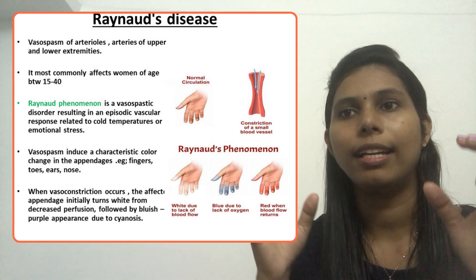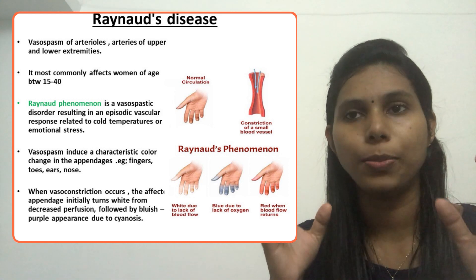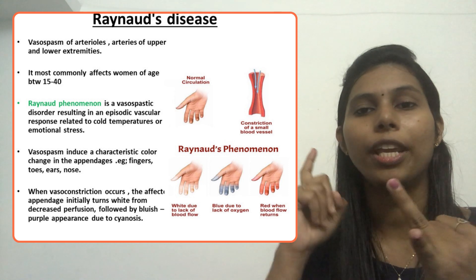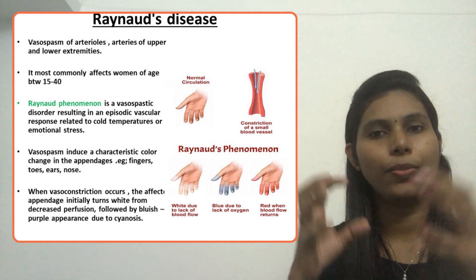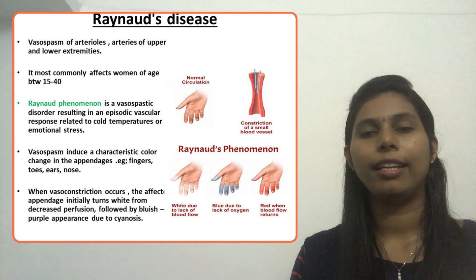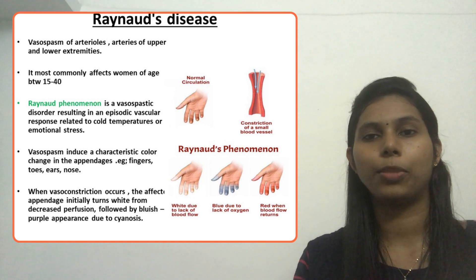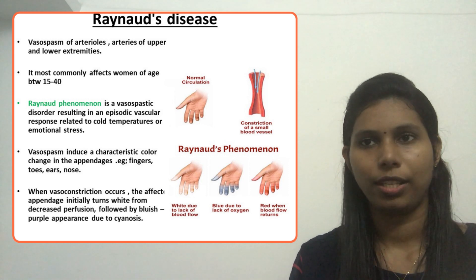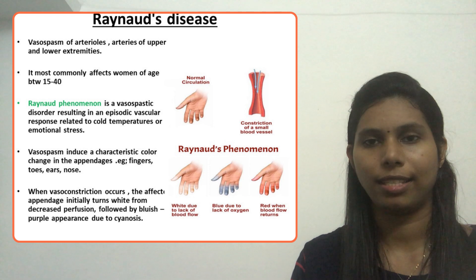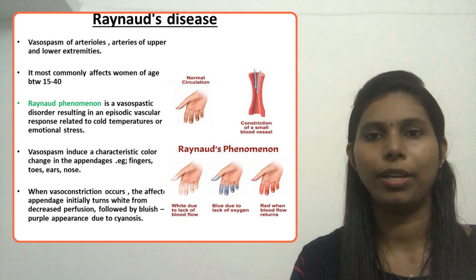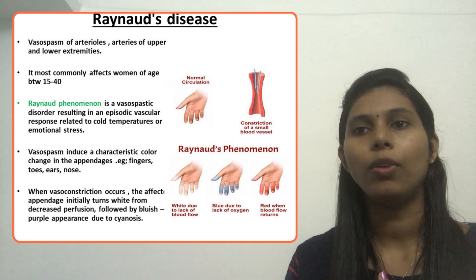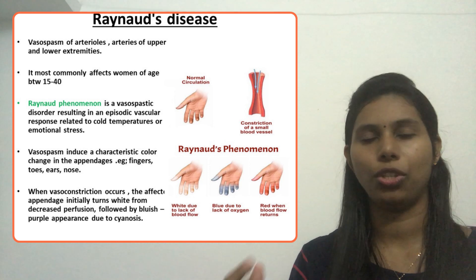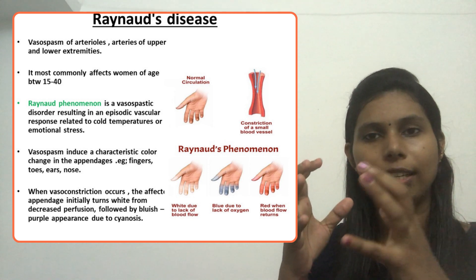Raynaud's phenomenon is a vasospastic disorder resulting in an episodic vascular response related to cold temperature or emotional stress. When the client is exposed to severe cold situations or there is emotional stress, that will exacerbate the condition. The vascular spasm induces a characteristic color change in the appendages.